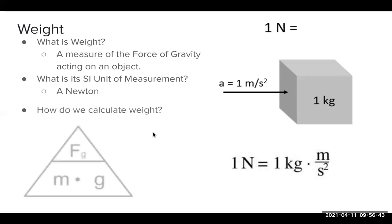How do we calculate weight? We get a new triangle. Recall that weight is the same thing as force of gravity. So sometimes you may see F_g or sometimes you might see weight, W here. It doesn't matter, it's the same thing. And it is equal to mass times the acceleration due to gravity.